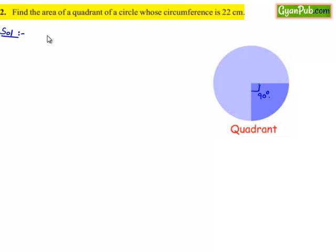Therefore, the given information is that the circumference of the circle is 22 cm and we need to find the area of the quadrant. So in order to find the area of the quadrant, let us initially find the radius of the circle.